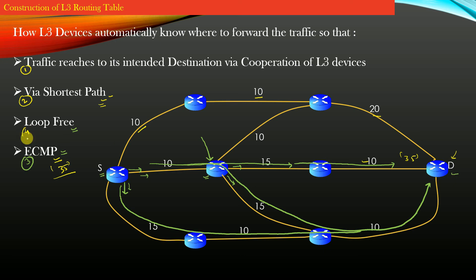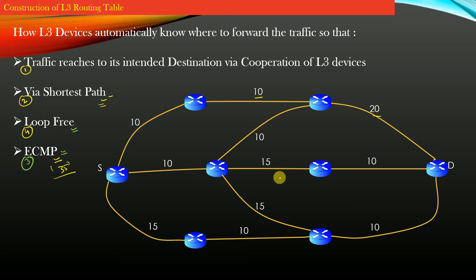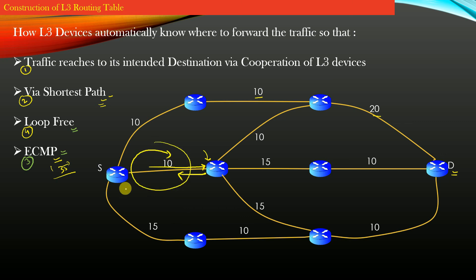For point four: each router in the topology always forwards traffic towards destination D — no router bounces traffic back to the preceding router. For example, if source router S sends traffic to router D via an intermediate router, but that router's routing table entry dictates sending traffic back out towards router S, the traffic loops. This means that router has a wrong routing table entry which creates a loop.